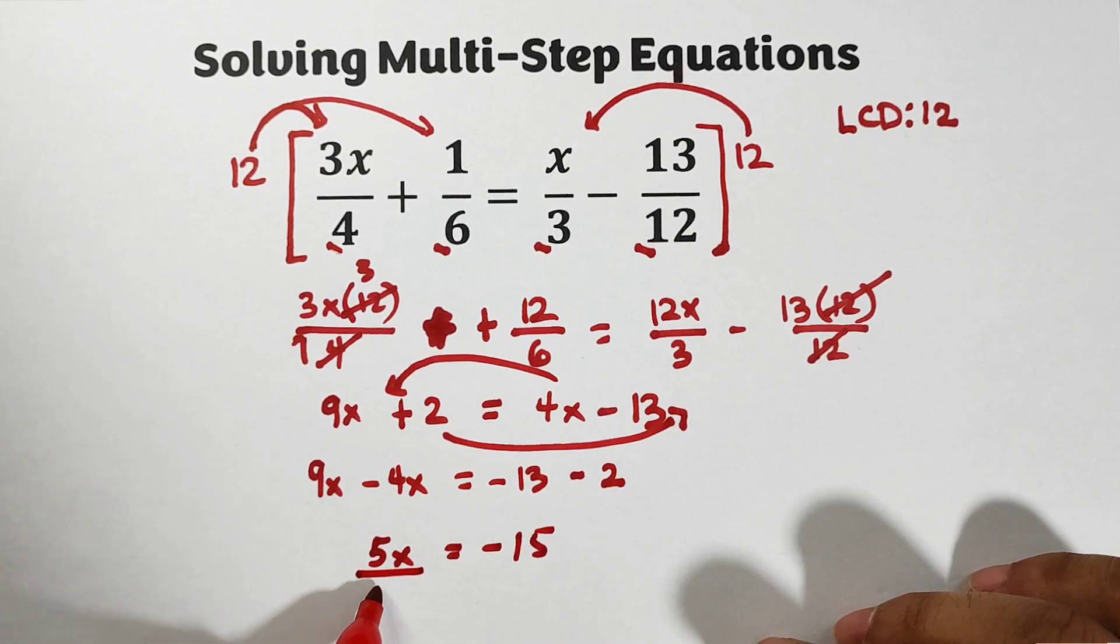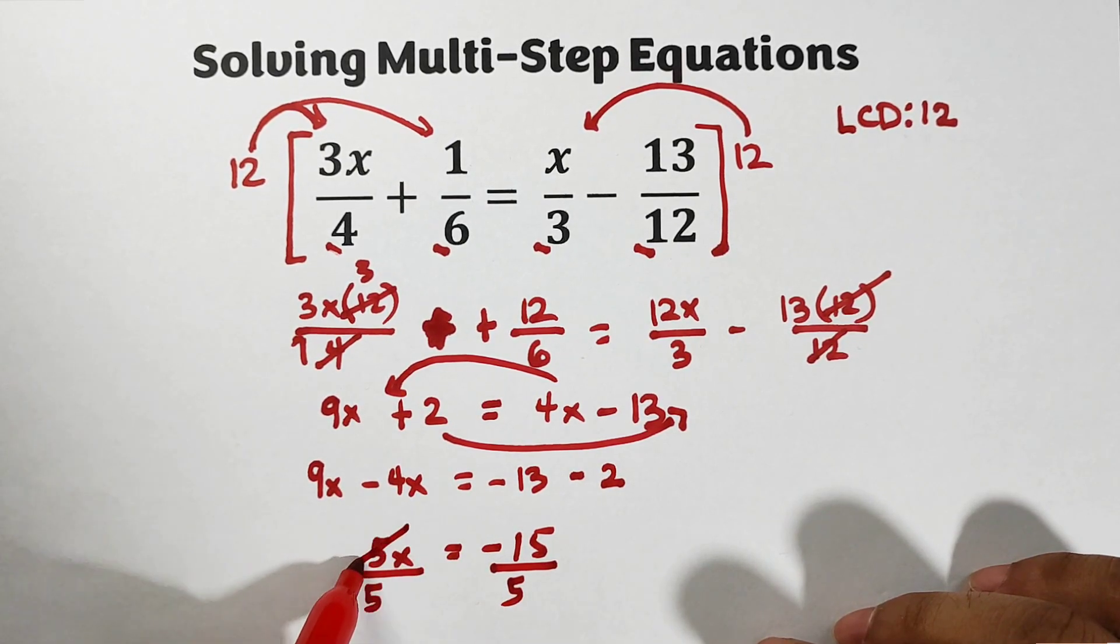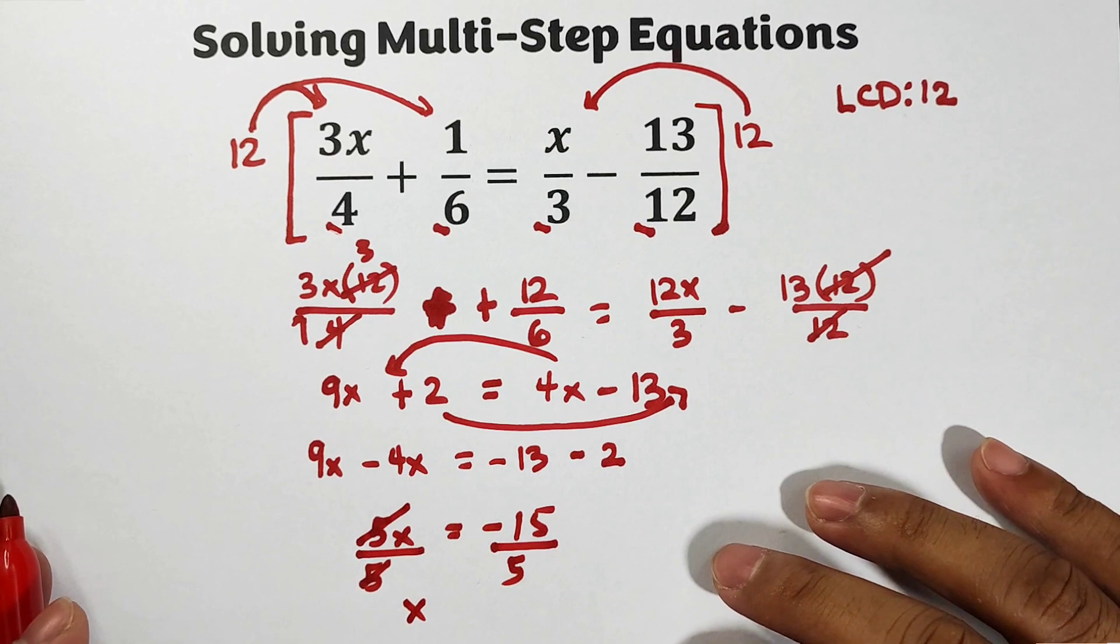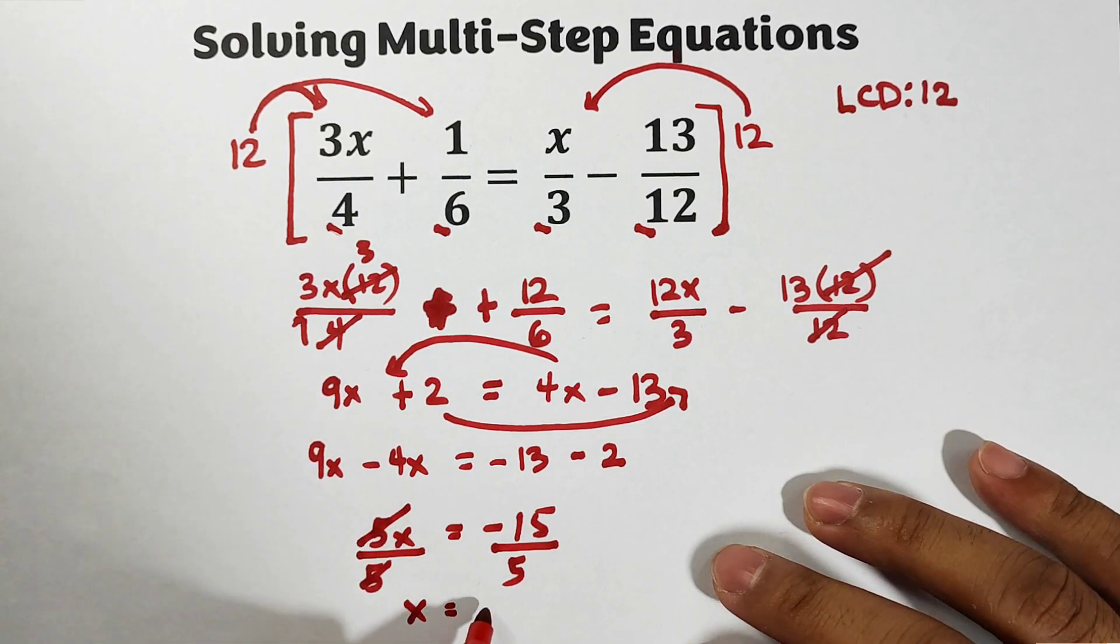This will become 5x. Again, 9x minus 4x is 5x. This is equal to negative 15. Divide both sides by 5. Divide by 5. Your x, let us adjust this paper, your x is equal to negative 15 over 5, which is negative 3.